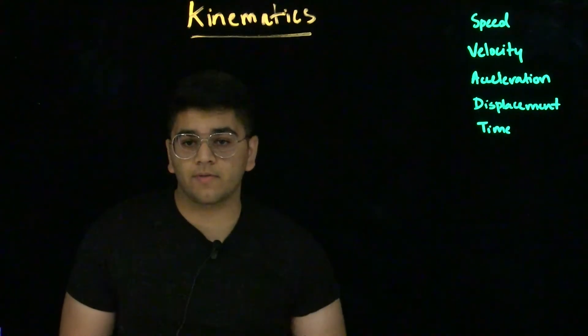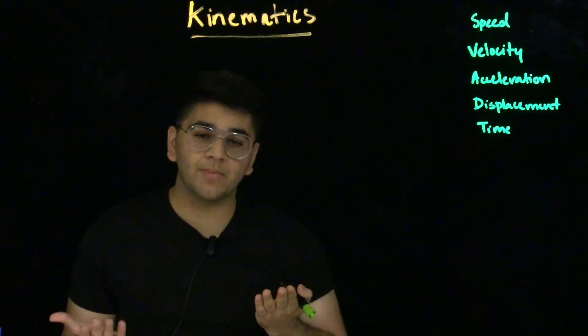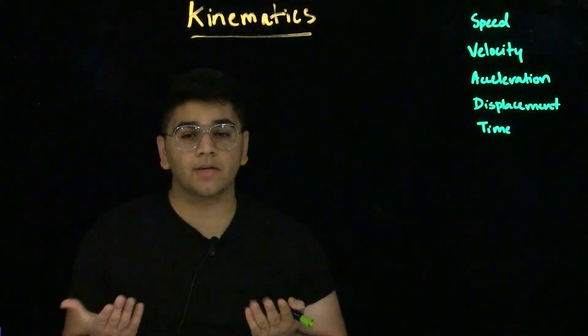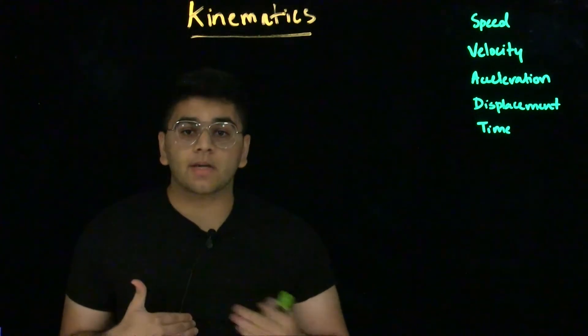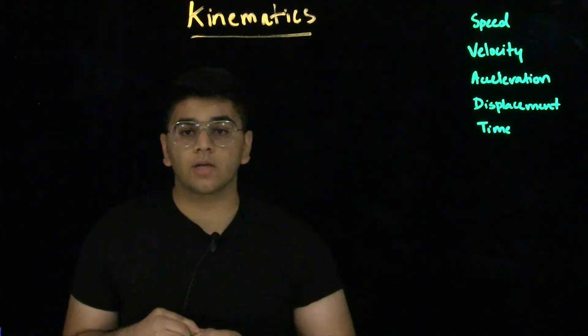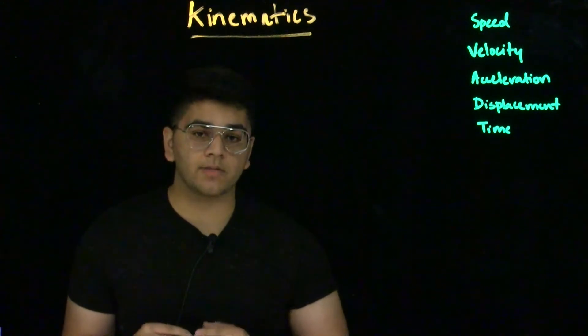Speed and velocity tend to be a very confusing topic because they mean the same thing when we consider magnitude. When we talk about the speed of an object, we talk about the distance it covers in a given amount of time. In velocity, we consider displacement in a given amount of time.